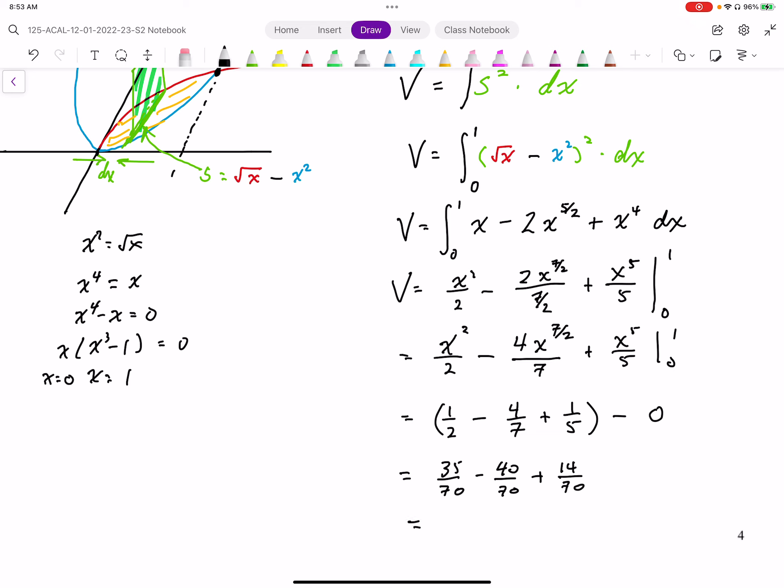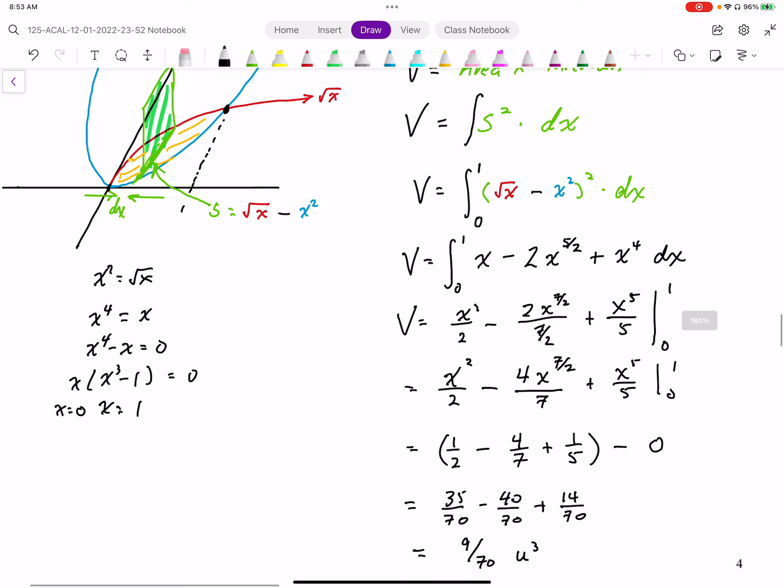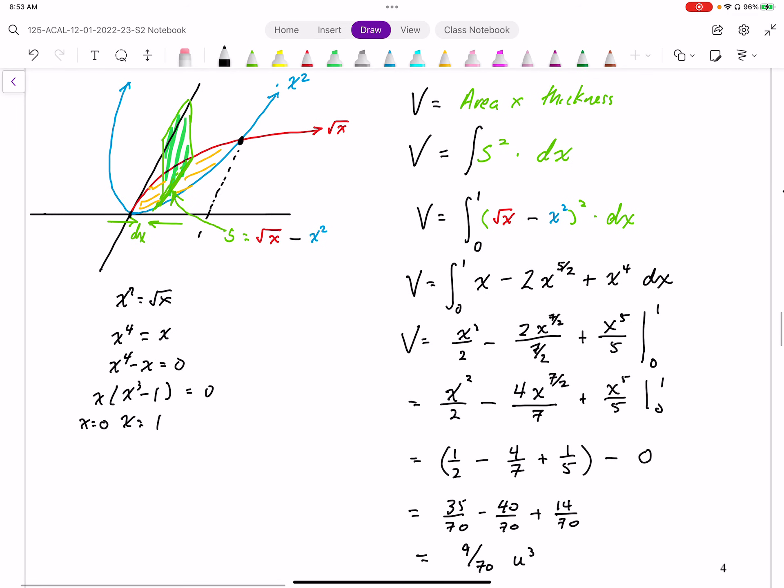So adding this all up, I end up with 9 over 70 units cubed represents the volume of that object that we will generate by taking those slices.